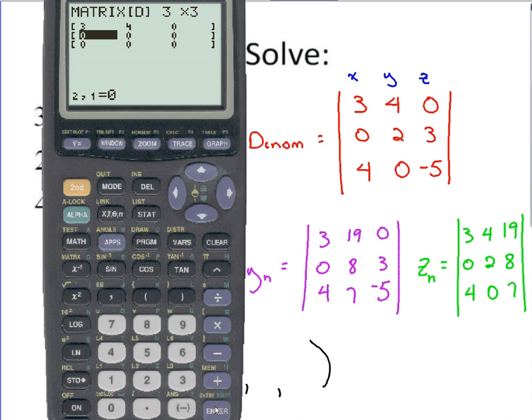Second row, you've got 0, 2, and 3. So 0, enter. 2, enter. 3, enter. And then you've got 4, 0, and negative 5. So double check to make sure you've got all the values in the right places. As long as all the values are in the right place.